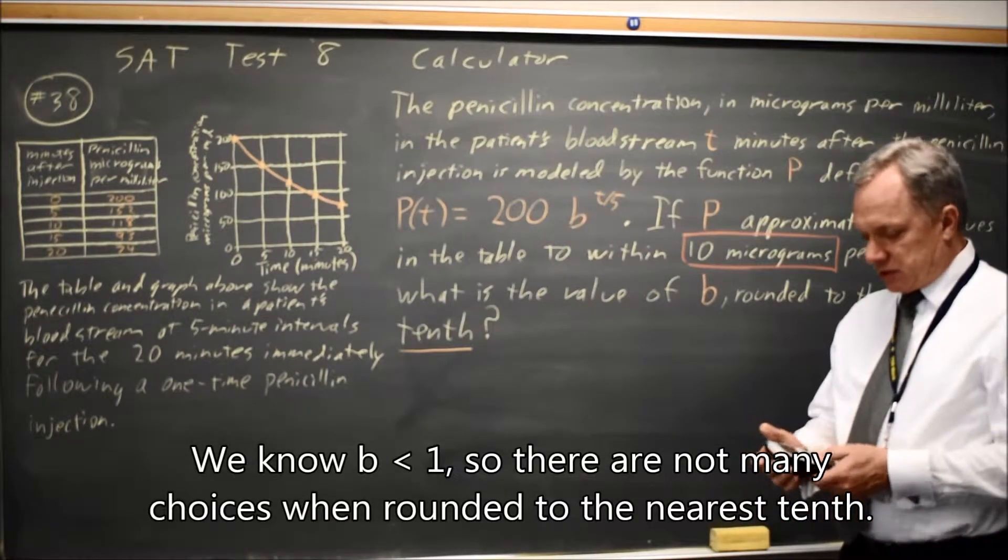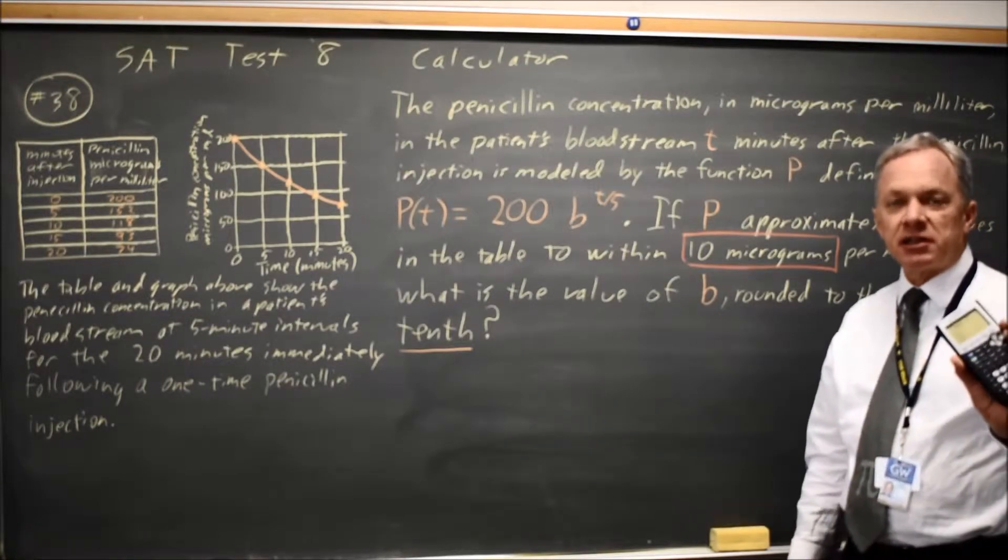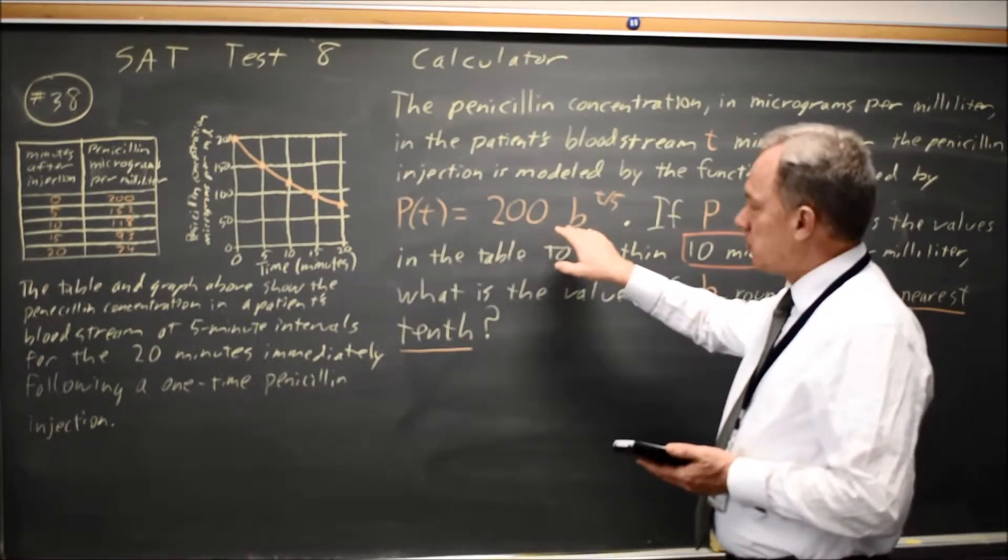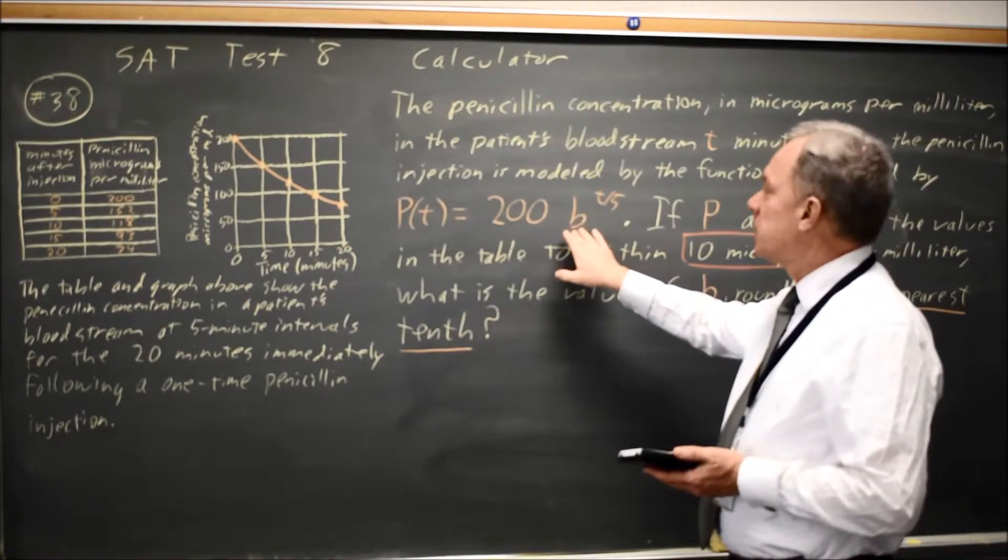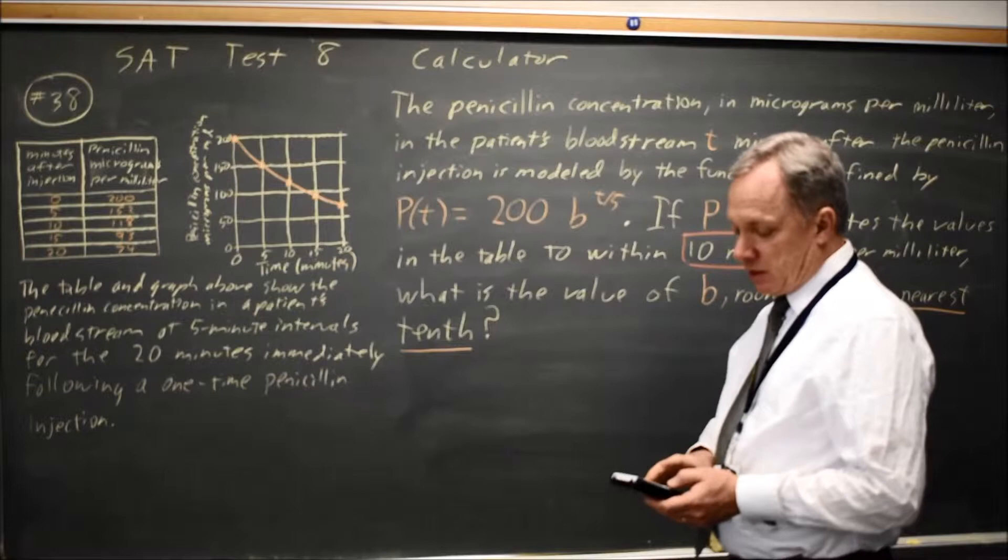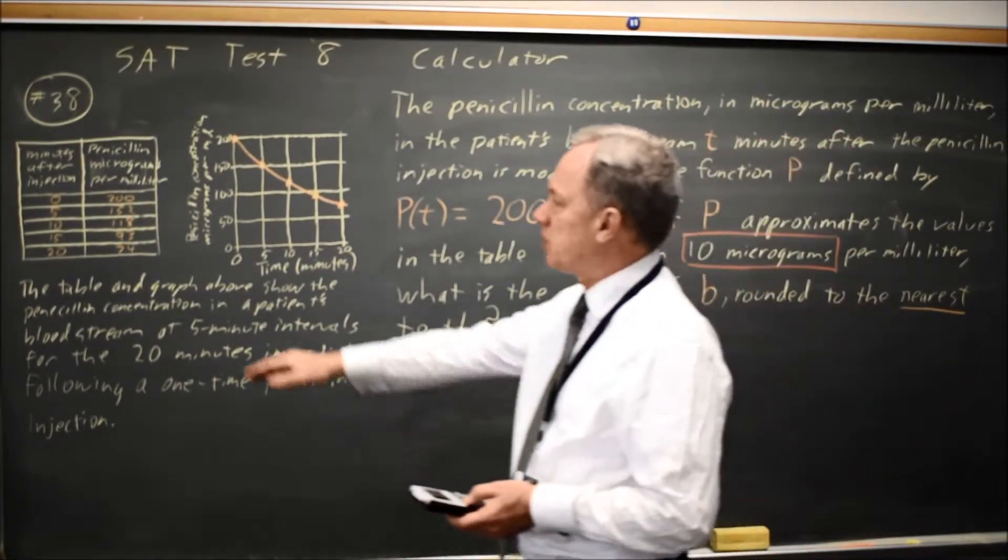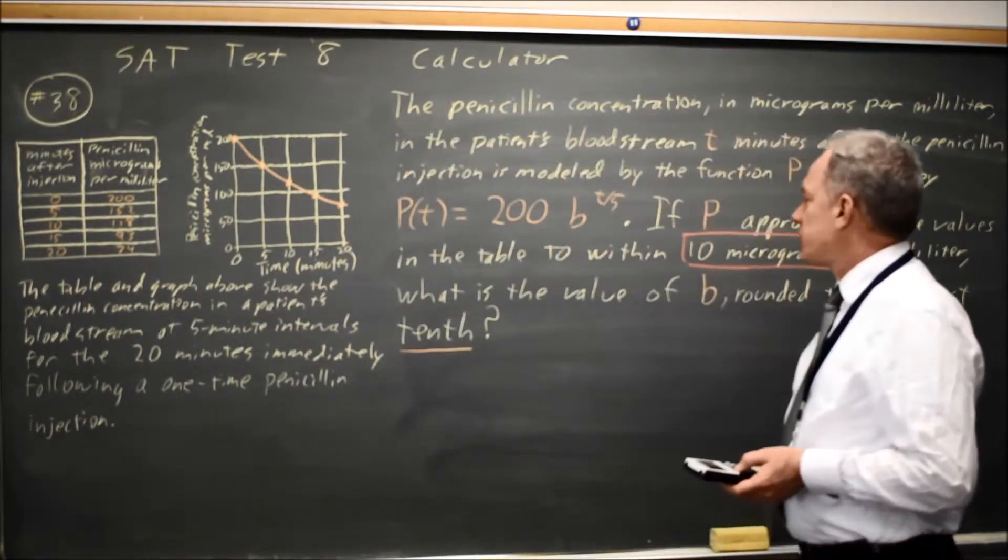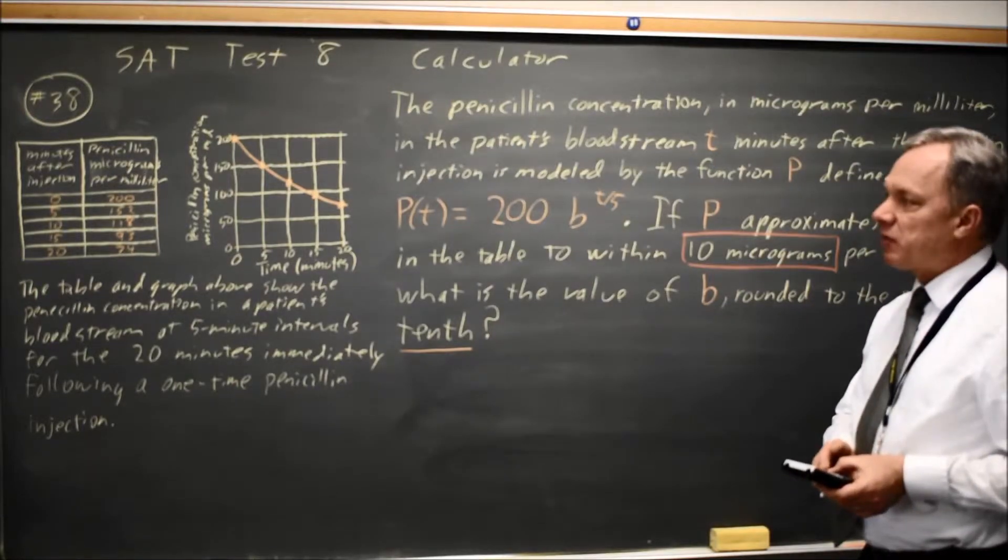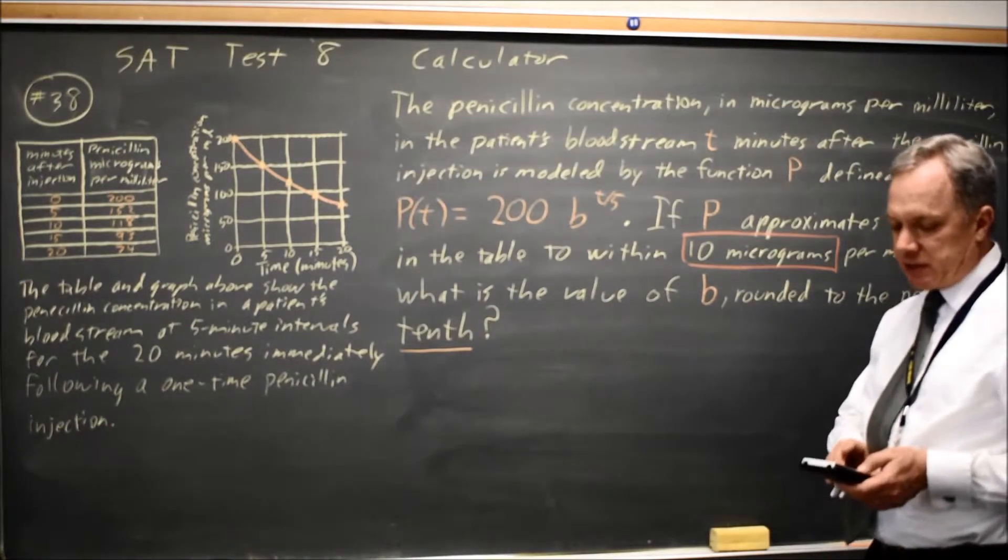In this case, since they've told us we're rounded to the nearest tenth, I can use my calculator. This is a calculator question, and put into Y equals 200 times, for example, 0.9 to the power of X over 5. If I try 0.9, the question is, in a table where I use table set to start at 0 and go up in increments of 5, because the table they gave me has increments of 5, am I within 10 micrograms? And this says at 5 minutes I have 180, which is not within 10.